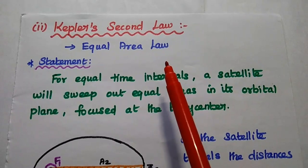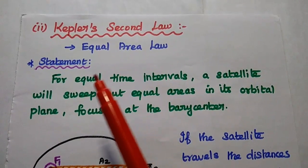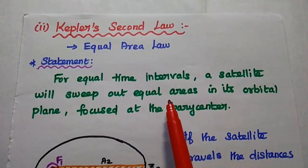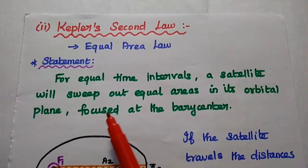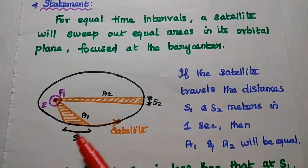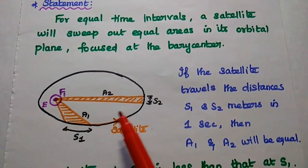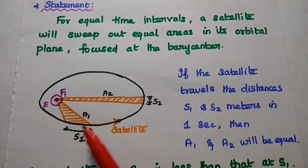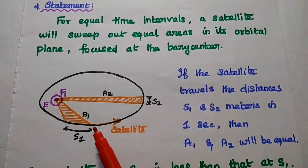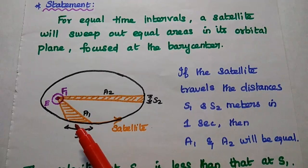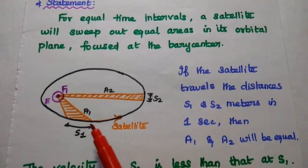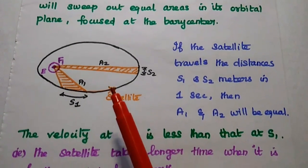The next is Kepler's second law. It is also called the law of equal areas. It states that for equal time intervals, a satellite will sweep out equal areas in its orbital plane, focused at the barycenter. That means if a satellite travels the distances S1 and S2 in one second, then the area A1 covered by distance S1 and the area A2 covered by distance S2 will both be equal. So when the satellite travels distance S1 at one point and S2 at another point in one second, the areas covered will be equal.